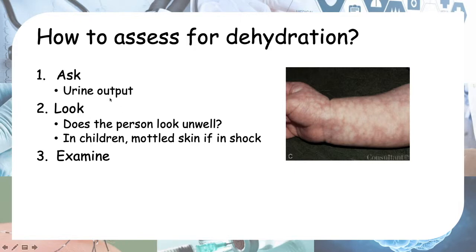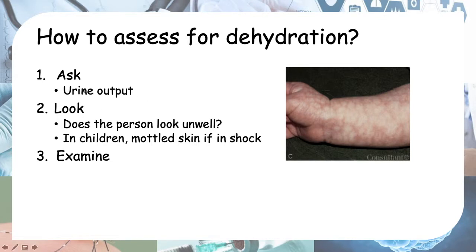Another mechanism causing reduced urine output is certain diseases or conditions where fluid goes into the third space. For example, in dengue, fluid leaves your cells and goes into other places like your lungs or peritoneum. These are third spaces, and you will be dehydrated in these cases.